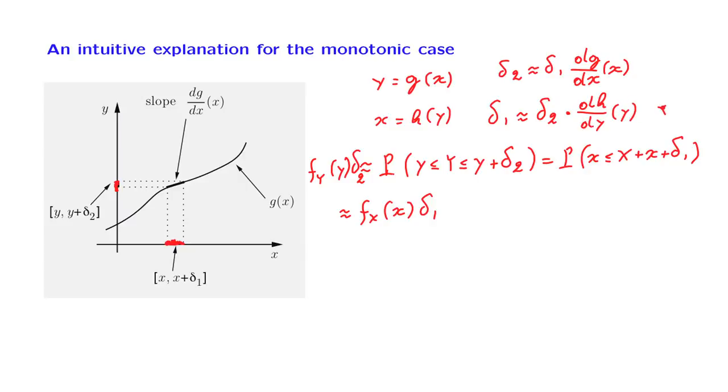So this is the relation that we're going to use. And so we replace delta_1 by this expression that we have here in terms of delta_2. And now we cancel the delta_2 from both sides of this equality.